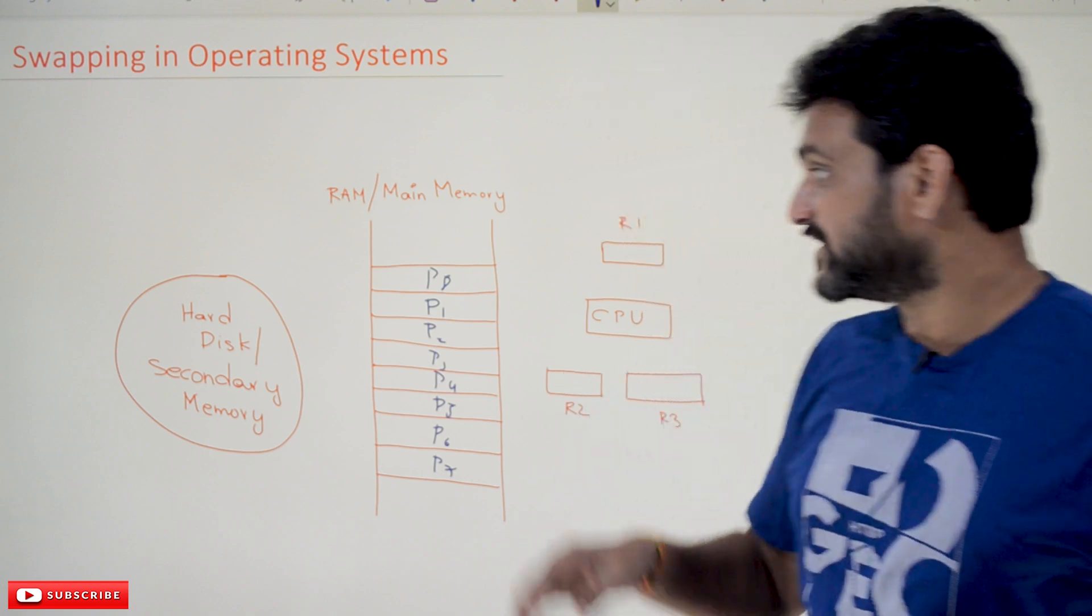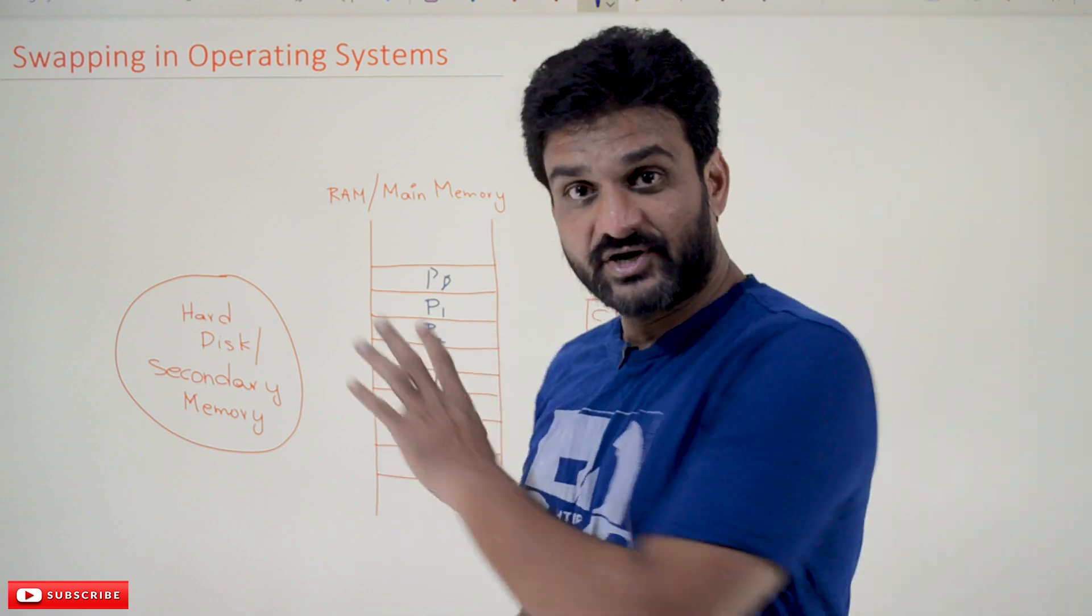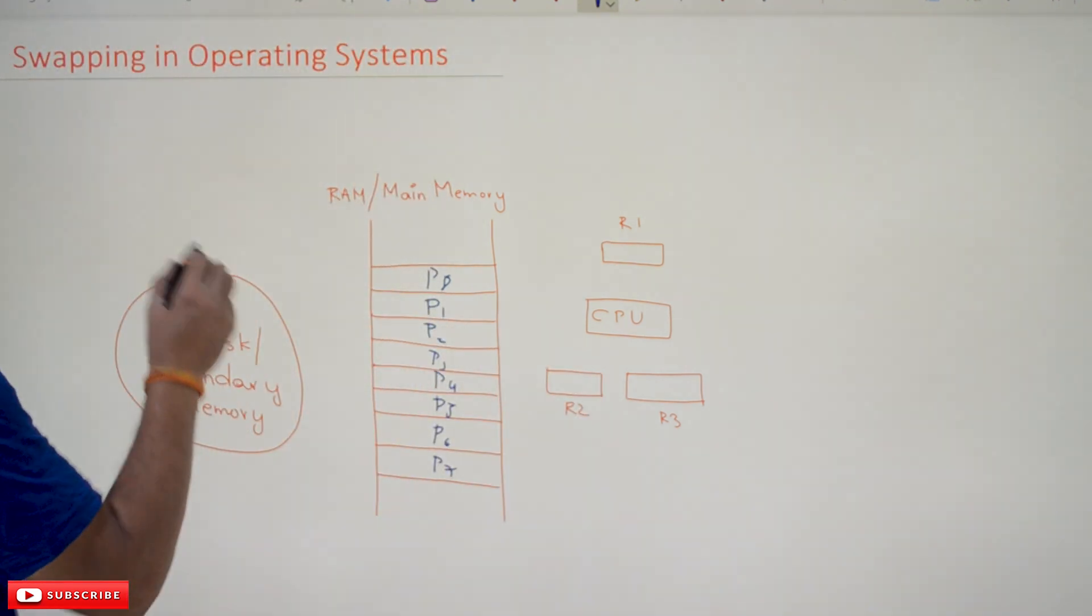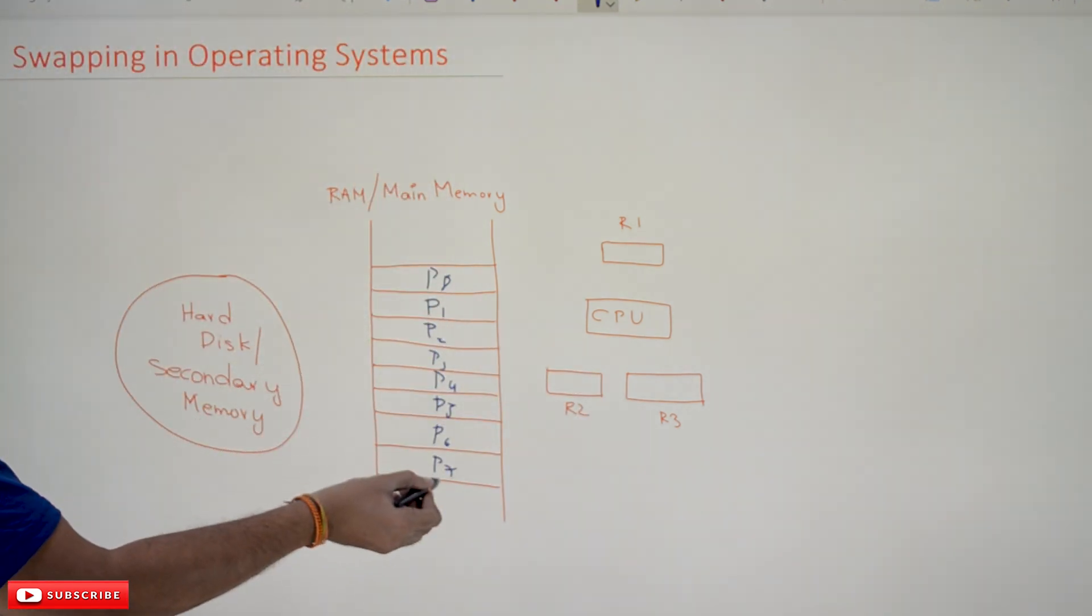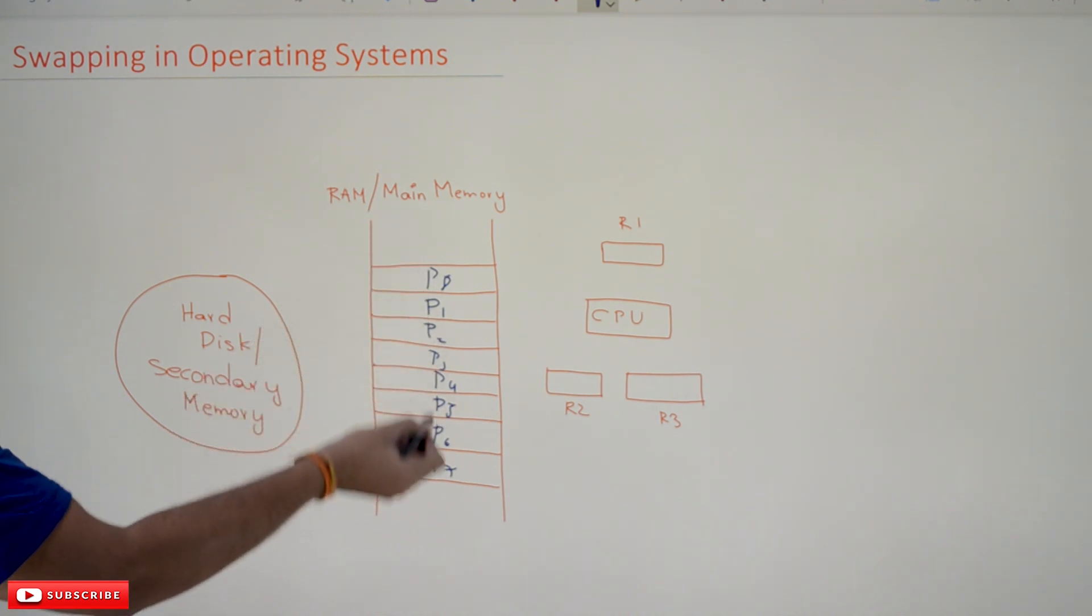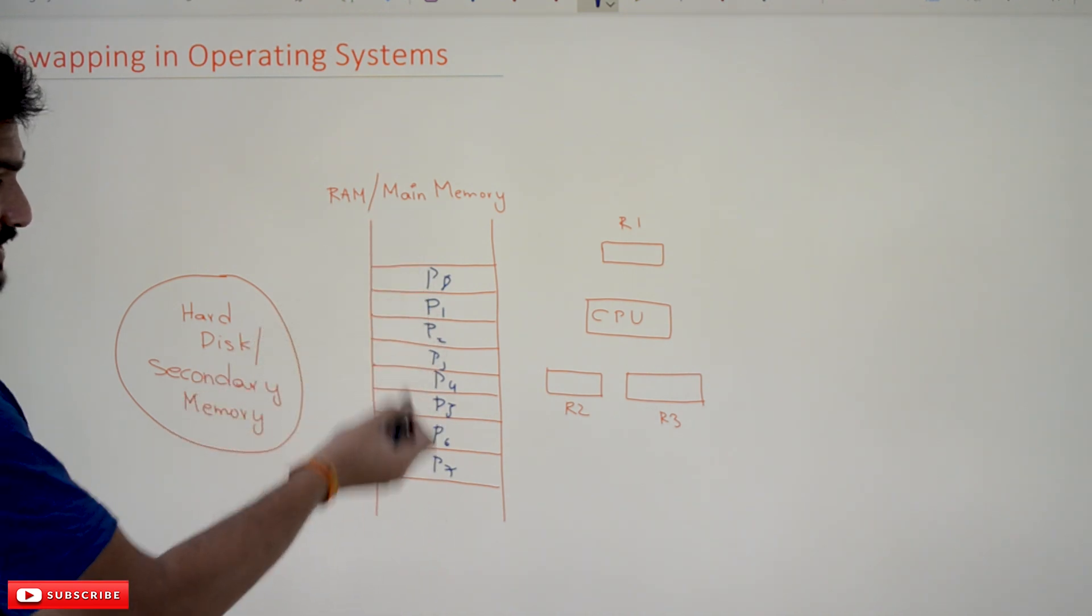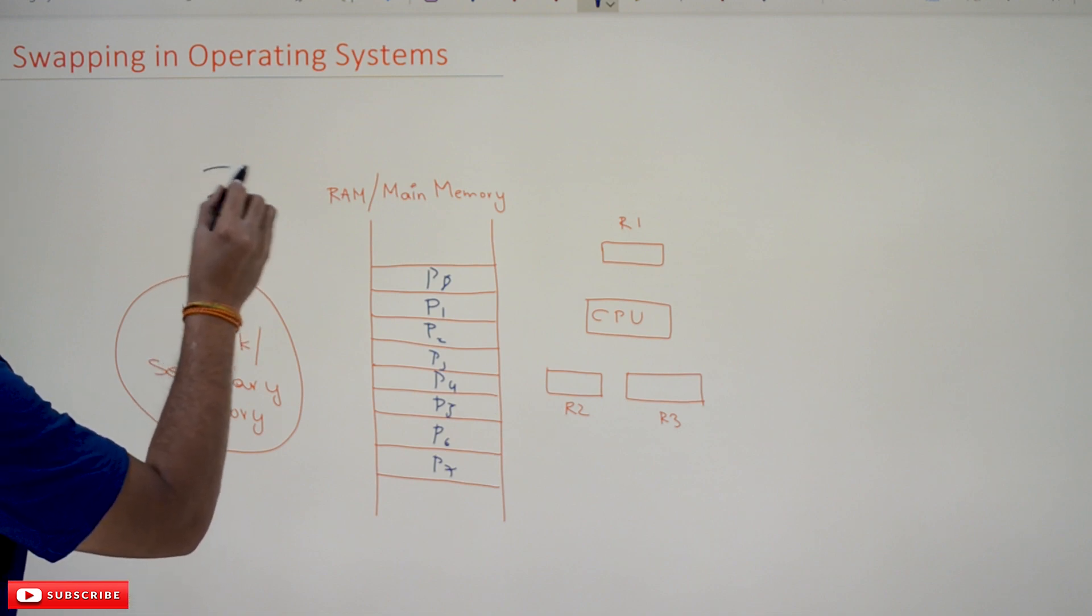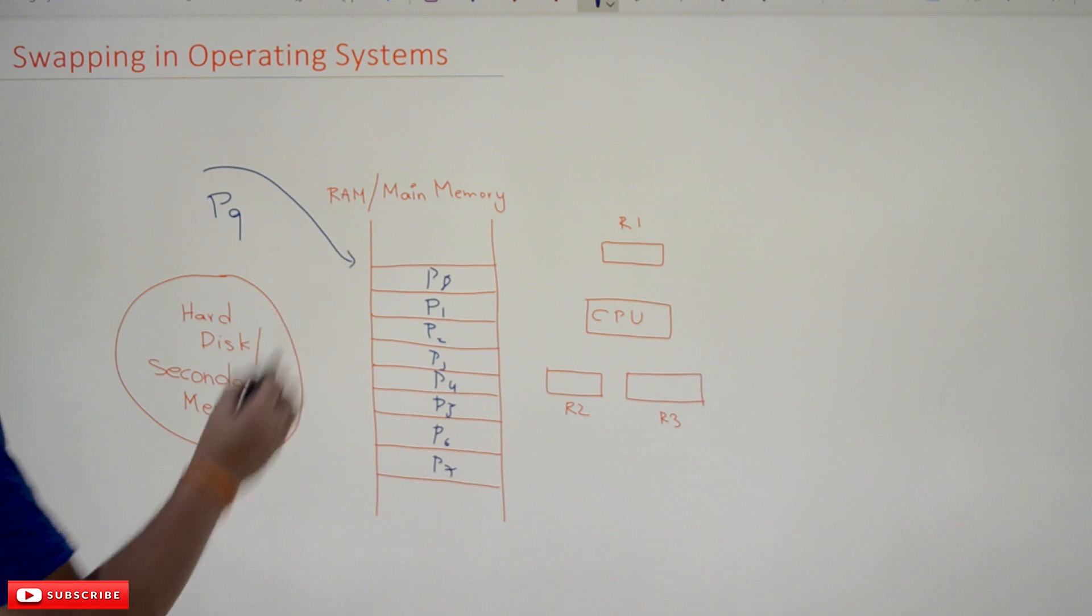Let's try to understand this using an example. Suppose processes are there on the primary or main memory, and they're getting executed. For example, if process P9 is there and this process P9 wants to execute on the CPU, and P9 has the highest priority...